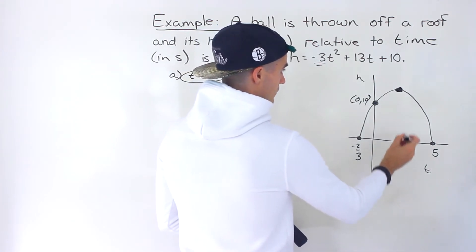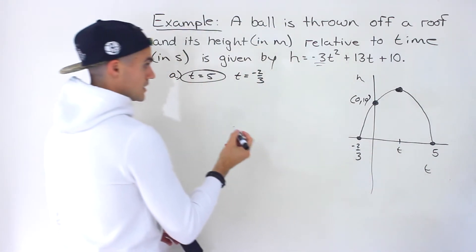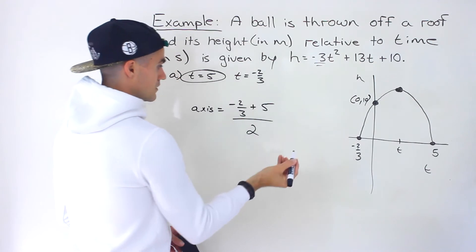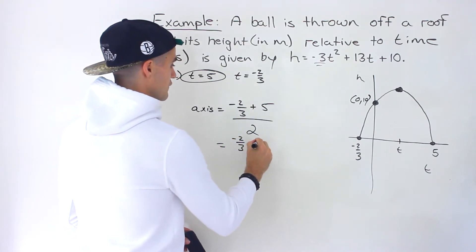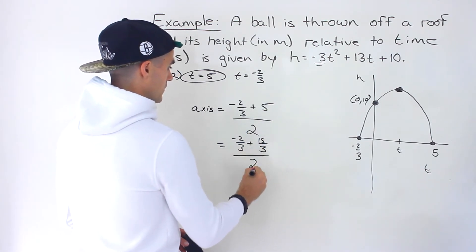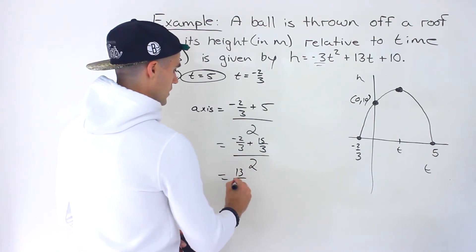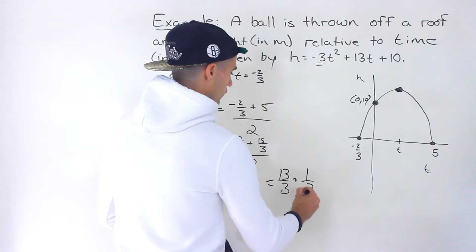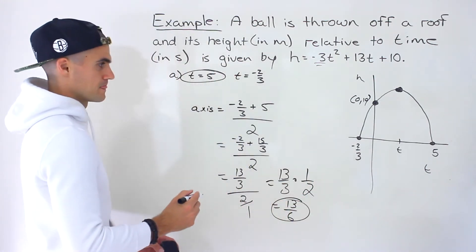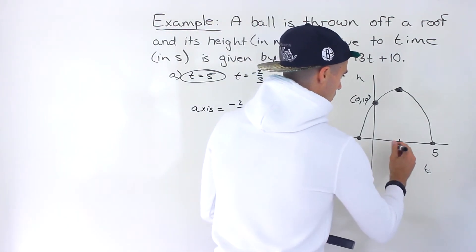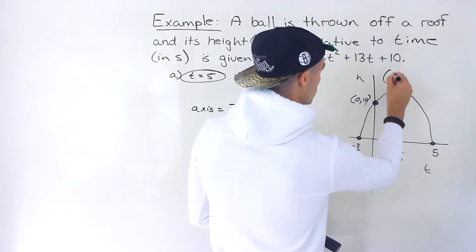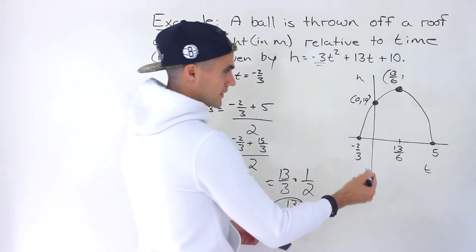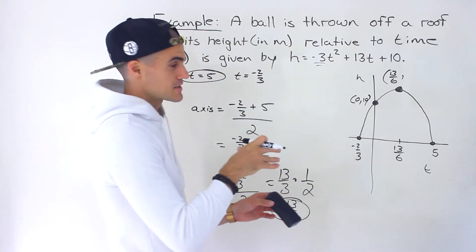So let's first find the t value of the vertex, which is going to be the midpoint between those two intercepts — that's the axis of symmetry. We add the intercepts and divide by 2: negative 2 over 3 plus 15 over 3, all divided by 2, gives us 13 over 3 divided by 2. Dividing by 2 is like multiplying by 1 over 2, so that's 13 over 3 times 1 over 2, which gives us 13 over 6. So the t value of the vertex is 13 over 6, which is approximately 2.167 repeating — but we need the exact value, so no decimals.